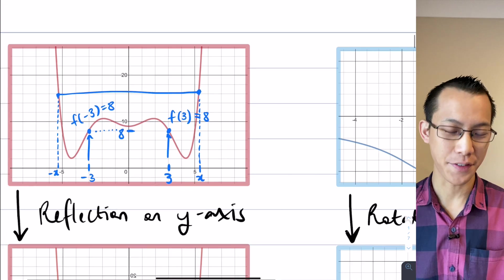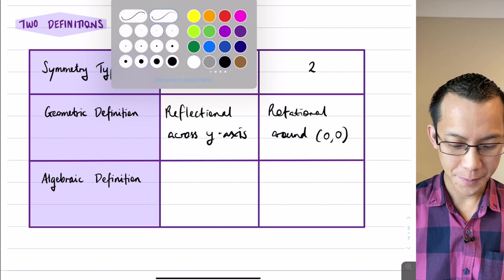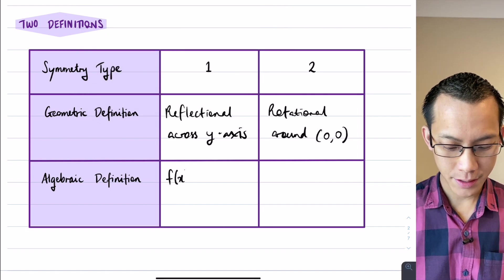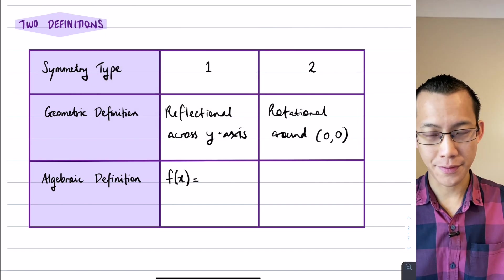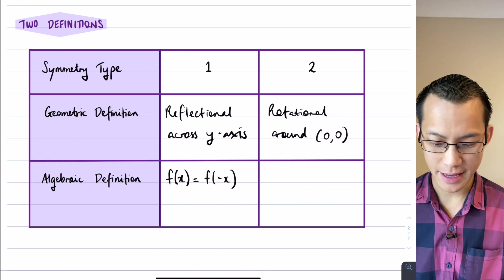So this is the way that I can algebraically define this new kind of symmetry here. I can say f(x) for any value of x, 2, 3, 4, 5, whatever, and f(-x), negative x, they give me the same thing.